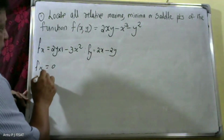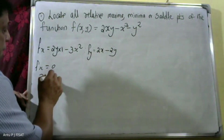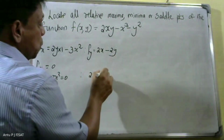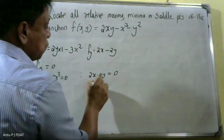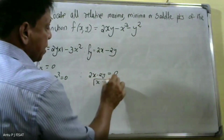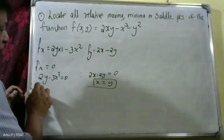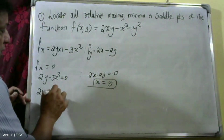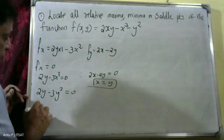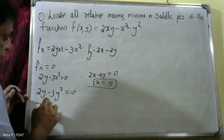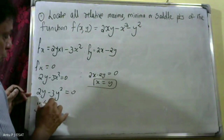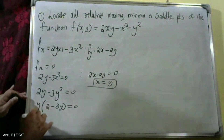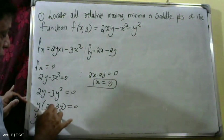Set fx equal to 0: that is 2y minus 3x squared equals 0. Set fy equal to 0: that is 2x minus 2y equals 0, therefore x equals y. Substituting x equals y gives 2y minus 3y squared equals 0. Taking y outside: y(2 minus 3y) equals 0, so y equals 0 or 2 minus 3y equals 0.